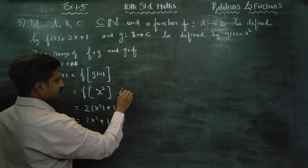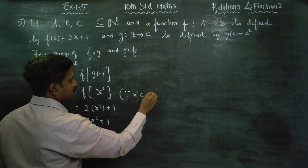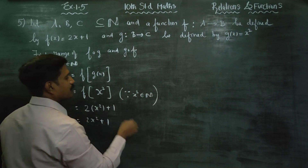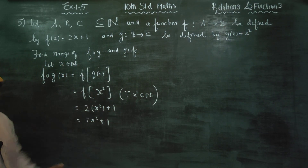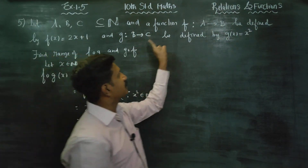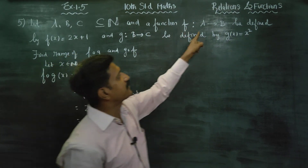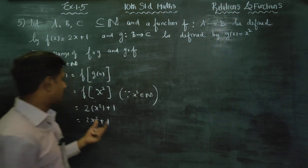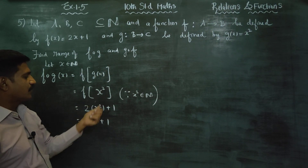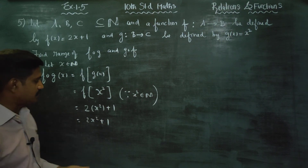Because x squared also belongs to natural numbers. For example, you can take x equals 2. 2 squared is 4. 4 times 2 is 8. 8 plus 1 is 9. 9 is also a natural number. So this is a natural number.